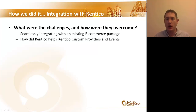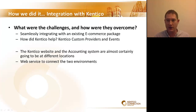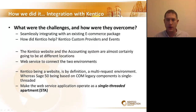So, we know what we want to do and why we want to do it. Now let's talk about how we integrated Sage50 and Kentico. Integration is always a concern when there is a third-party tool. Fortunately, Kentico is not a black box — it's highly extensible using Kentico custom providers and events to insert our own code. The next concern is that Kentico, being a website, is more than likely going to be in a data center somewhere, and the accounting system is likely to be within a company network at a different location. The solution was to create a web service to allow these two systems to communicate. The third challenge is that Kentico is a multi-request environment, whereas Sage50, being based on COM legacy components, is single-threaded. The solution was to make the web service application operate as a single-threaded apartment.